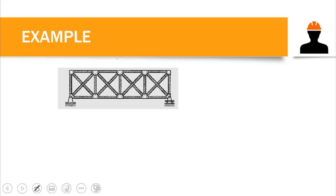For figure D, our last example: counting the number of bars — note that where two bars cross without a joint, it counts as one whole bar — we have 21 members.